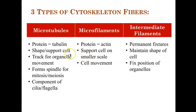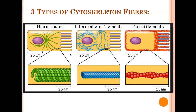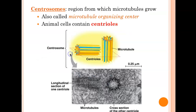Centrioles: there are two centrioles in an animal cell. It's the microtubule organizing center. They move to opposite ends of the cell right before mitosis and make the spindle — they form the spindle for mitosis.